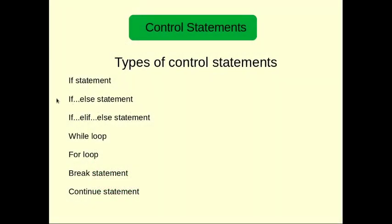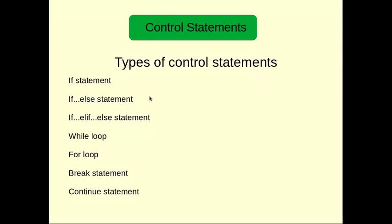The if-else statement combines both: the first condition which executes when it is true, and the second which executes when it is false. So if I say: if two is greater than five, then print hello, else print bye. If the condition results to true, print hello. Else, when it results to false, print bye.